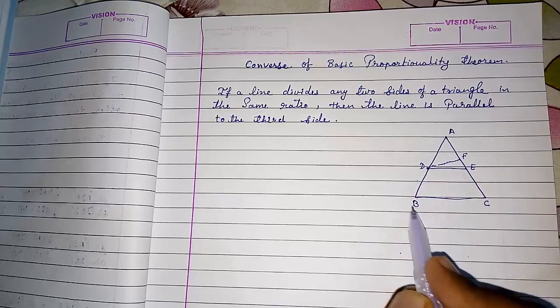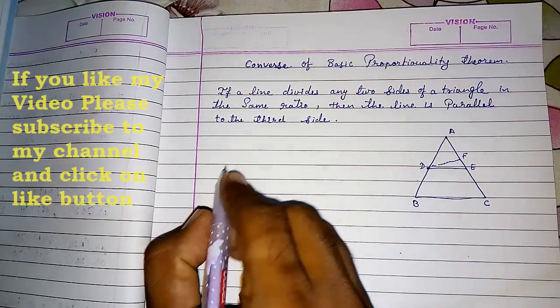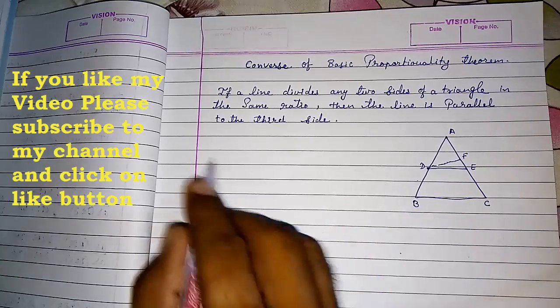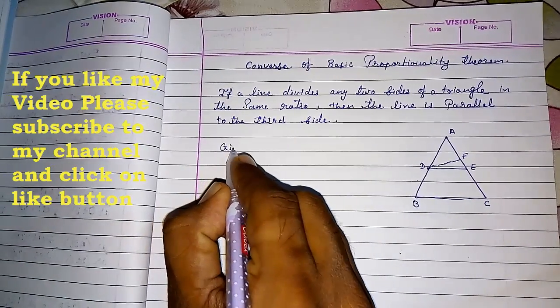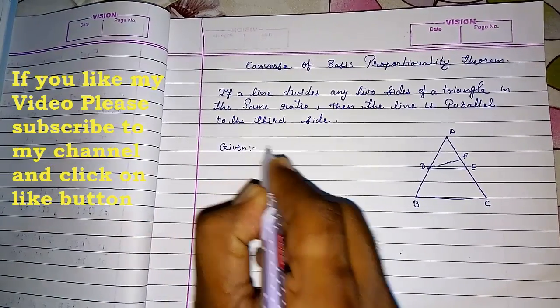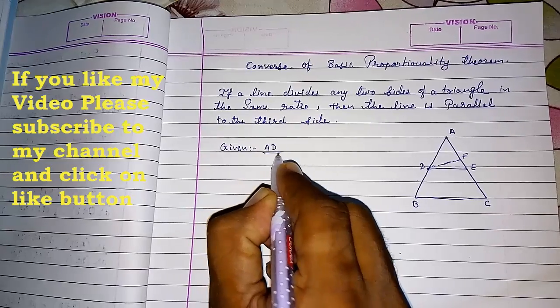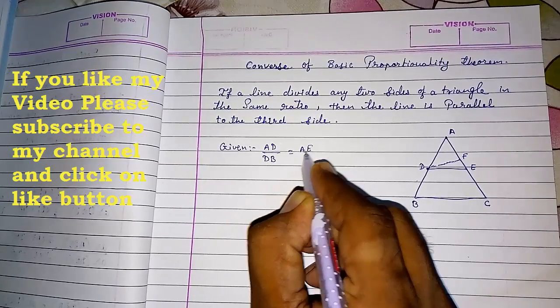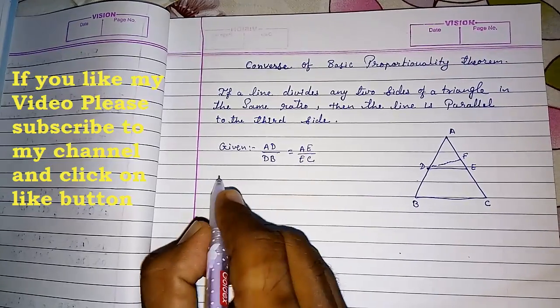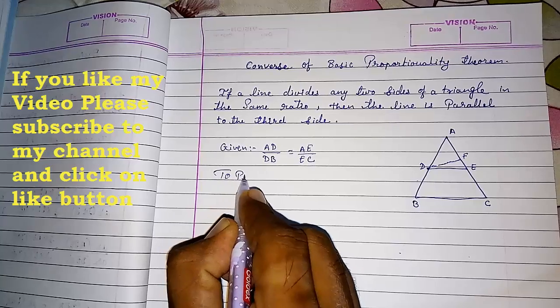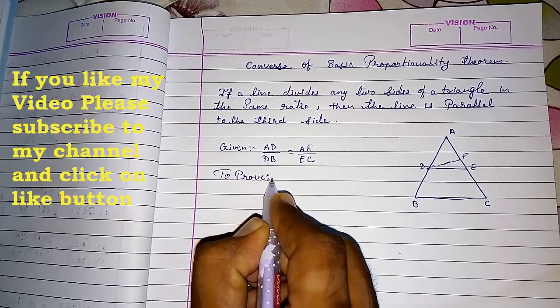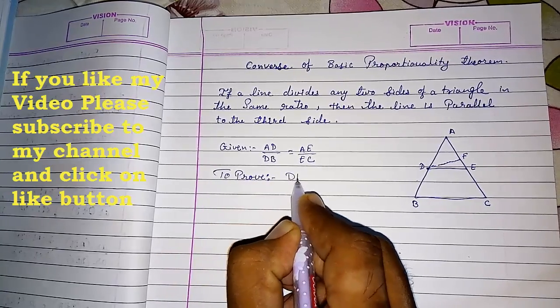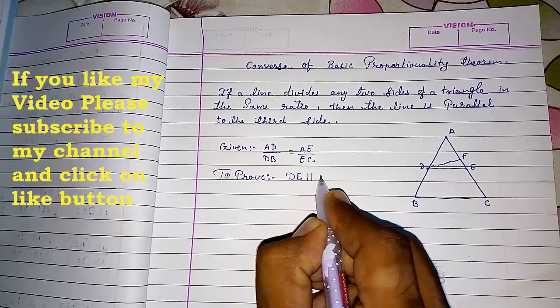Now, if DF is parallel to BC, what we can say? First I will write given. They had given AD by DB is equal to AE upon EC. To prove, we have to prove that DE parallel to BC.